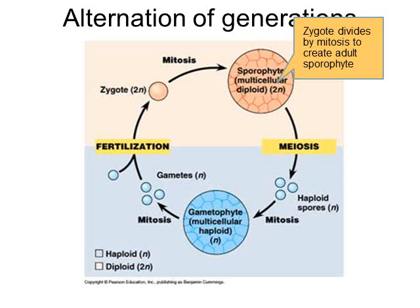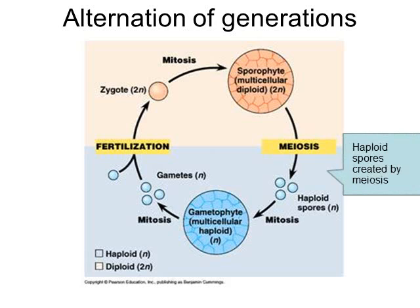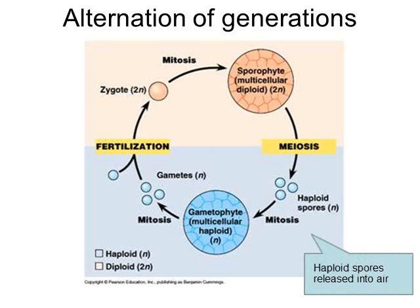After a plant has reached its adult sporophyte stage, follow the arrows — a portion of the sporophyte will perform meiosis. Anytime meiosis is performed, you start with a diploid cell and end haploid. Notice how the picture changes from peach, the diploid color, to blue, the haploid color, because meiosis creates haploid spores. Those spores are then released into the air and carried by wind or rain, and eventually they land.